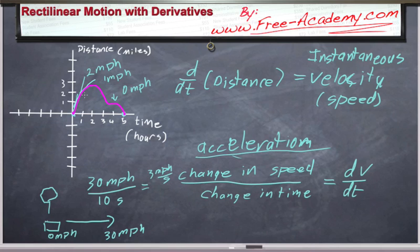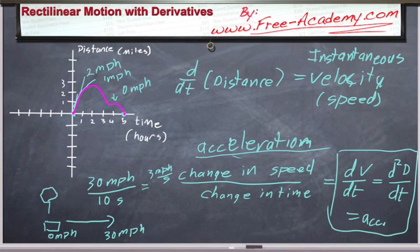So not only can we figure out on this graph here how fast the person is going, we can figure out at any particular time whether or not they're increasing their speed or not. And of course, your change in velocity with respect to time is also the second derivative of your distance with respect to time. And that all equals your acceleration.